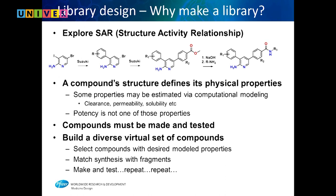Here's how we put these compounds together: take an aminopyridine with bromine and iodine, do one Suzuki reaction, then a second — iodine first then bromine. Hydrolyze the ester, make an amide. Four steps, and you put in three different groups onto your molecule. You can make hundreds at the same time.